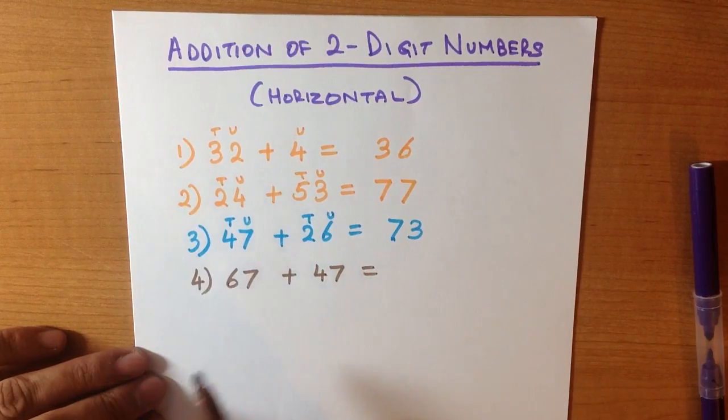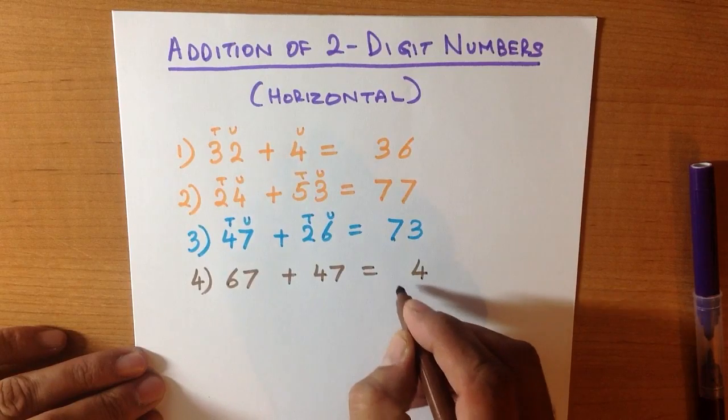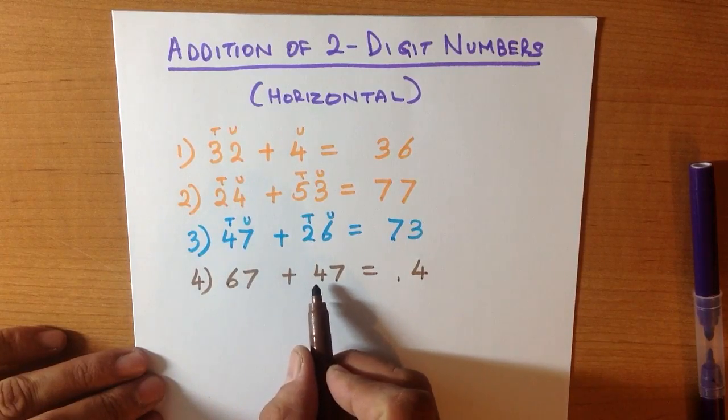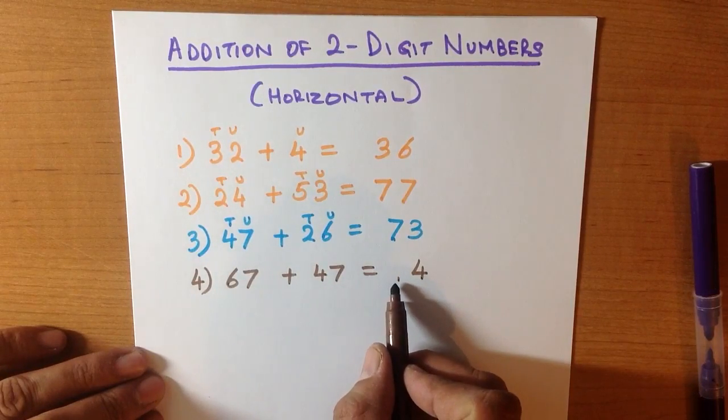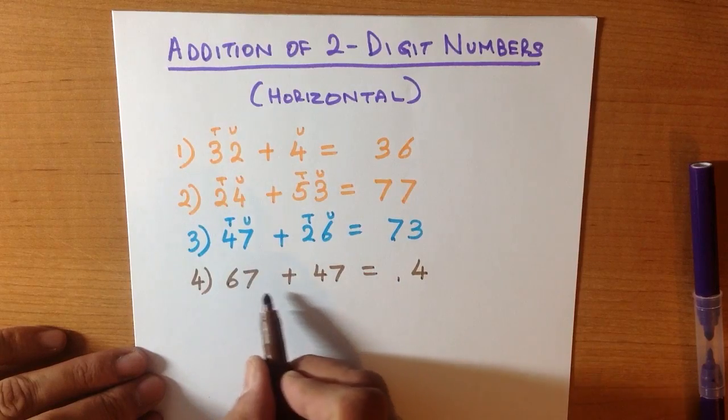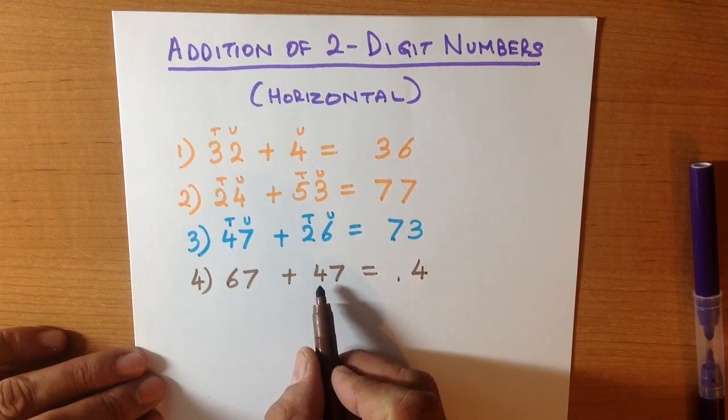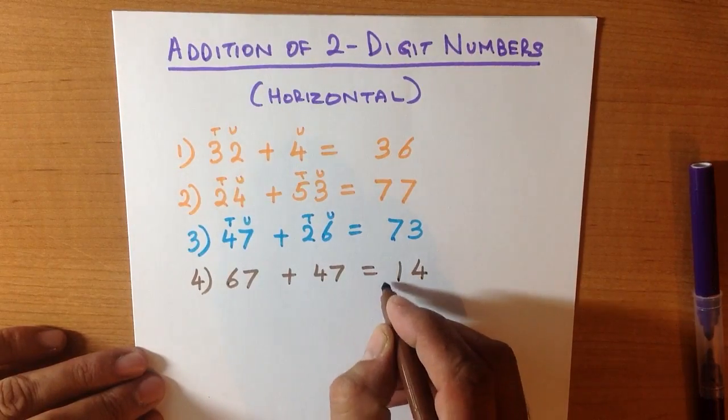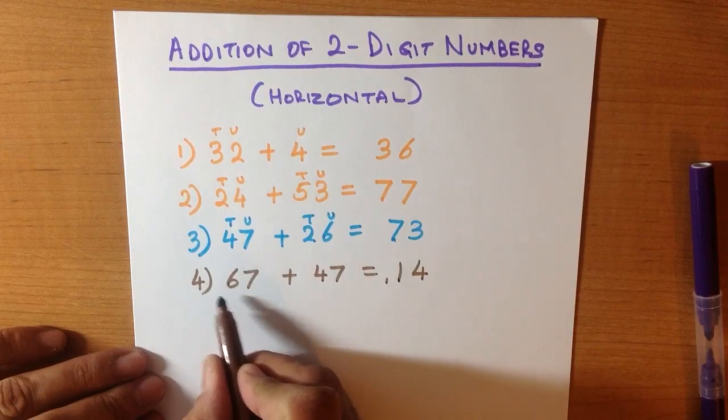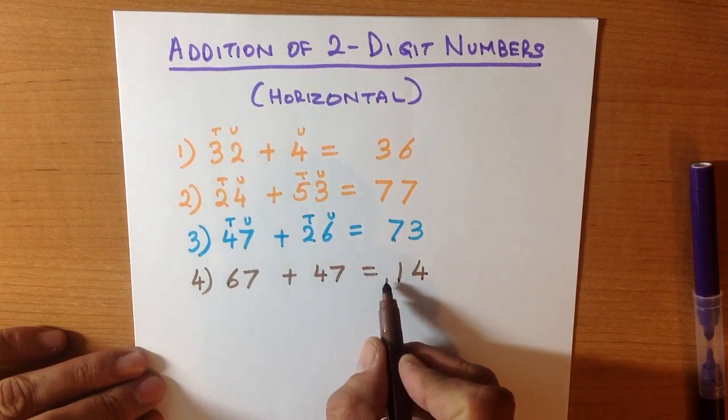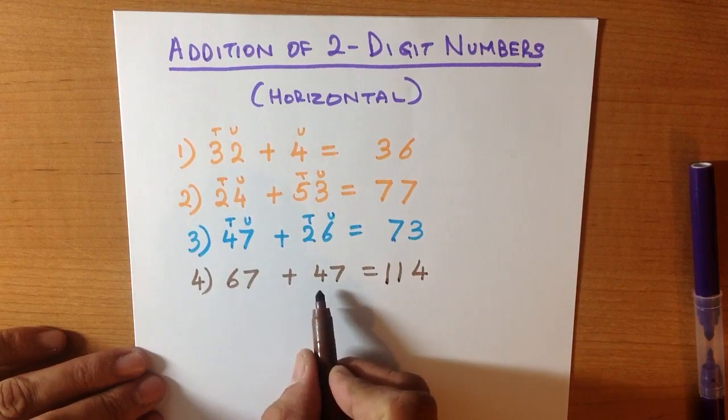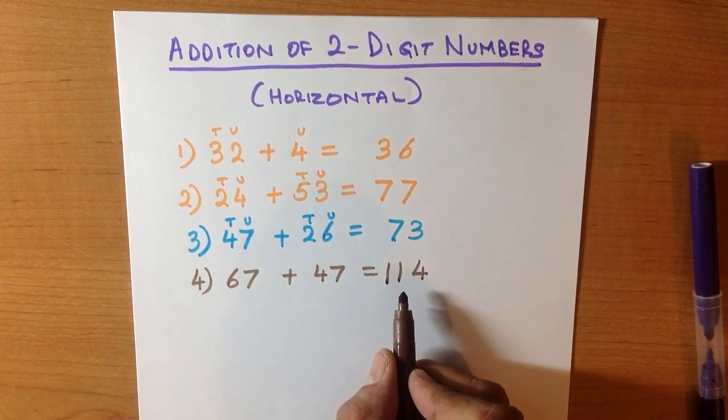7 plus 7 is 14. Let's put a little 1 here. Now we add the tens. 6 plus 4, and don't forget the 1 over here. 6 plus 4 is 10, plus the 1 is 11. Now there are no hundreds here, there are no hundreds here. There's just the 1 over here. So 67 plus 47 is 114.